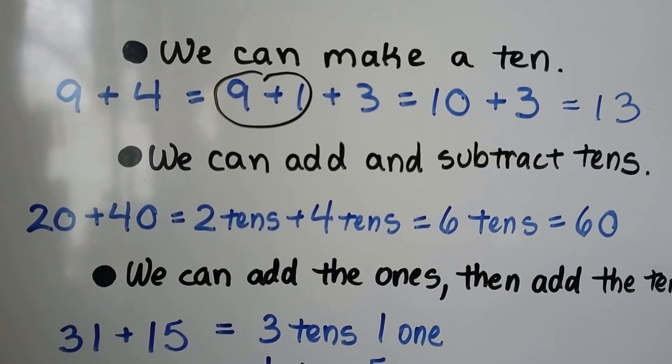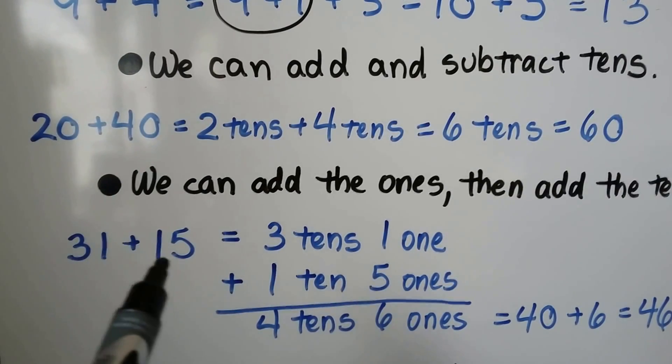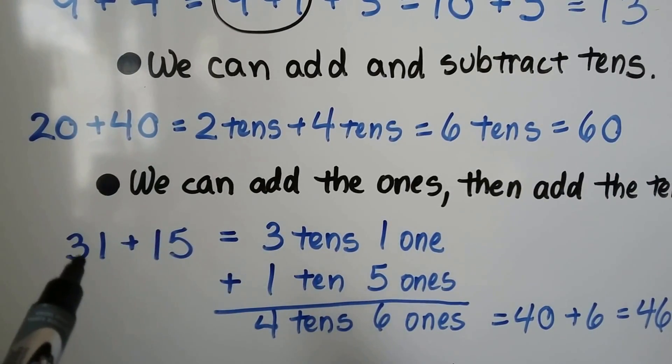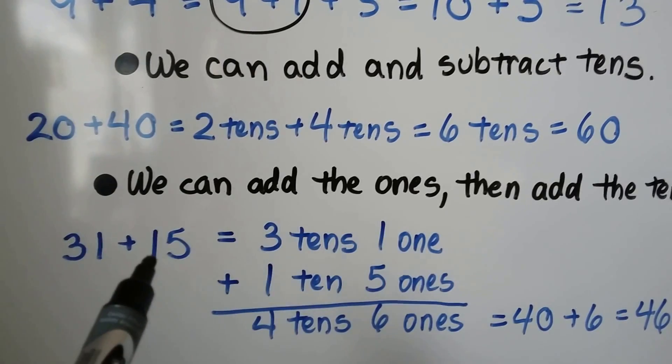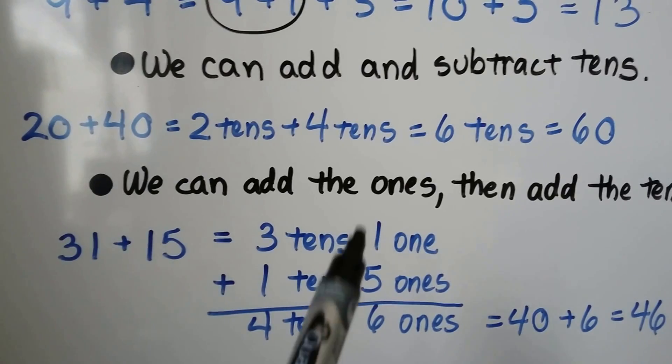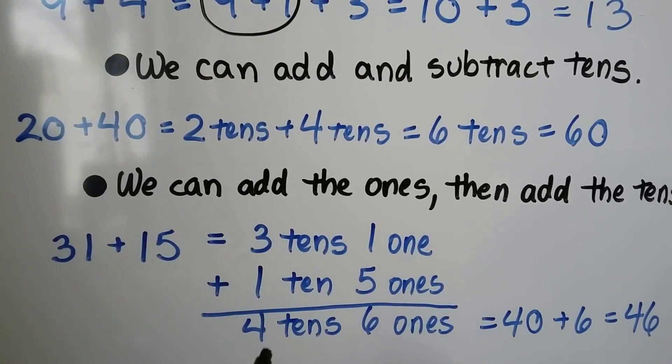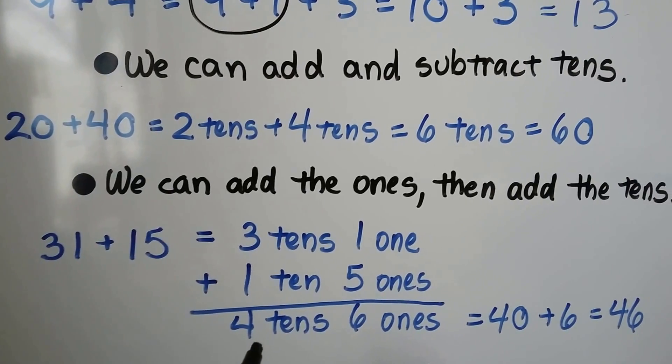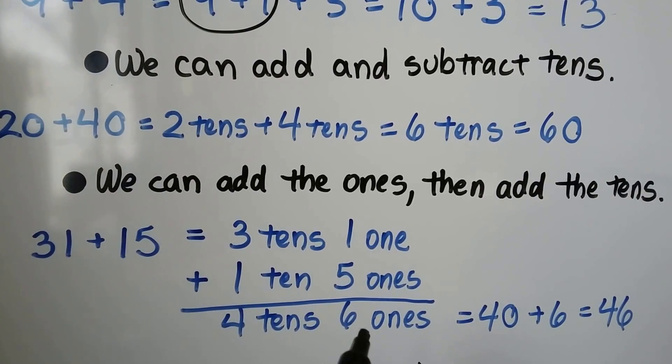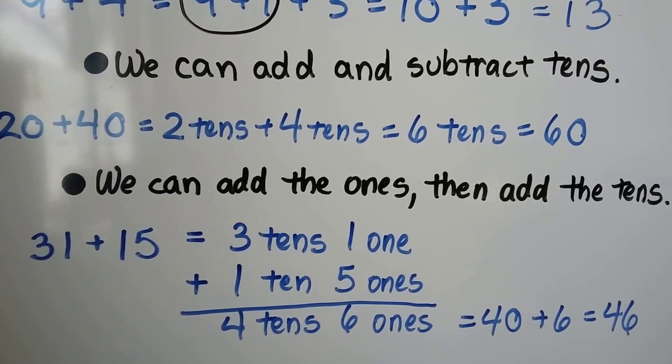We can add the 1s, then add the 10s. If we need to add 31 plus 15, we can add 3 10s and 1 1 and 1 10 and 5 1s. We can stack them. We add the 1s. 1 plus 5 is 6. We can add the 10s. 3 plus 1 is 4. We have 4 10s and 6 1s. That's equal to 40 plus 6, which is equal to 46.